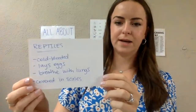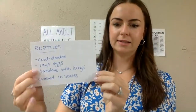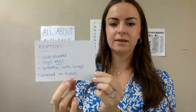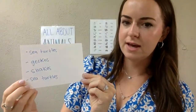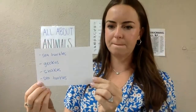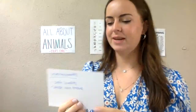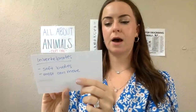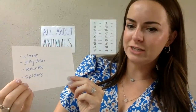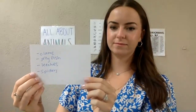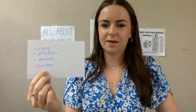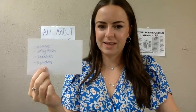Our next type of animal is a reptile. Reptiles are cold-blooded, they lay eggs, they breathe with their lungs, and they're typically covered in scales — like a snake has scales. Examples include sea turtles, geckos, and snakes. Next is invertebrates — they have really soft bodies and most of them can move. Examples include clams, jellyfish, leeches, and spiders. Does anybody know what spiders make? They live in a cobweb or a web, which they make with their silk. Nice job!